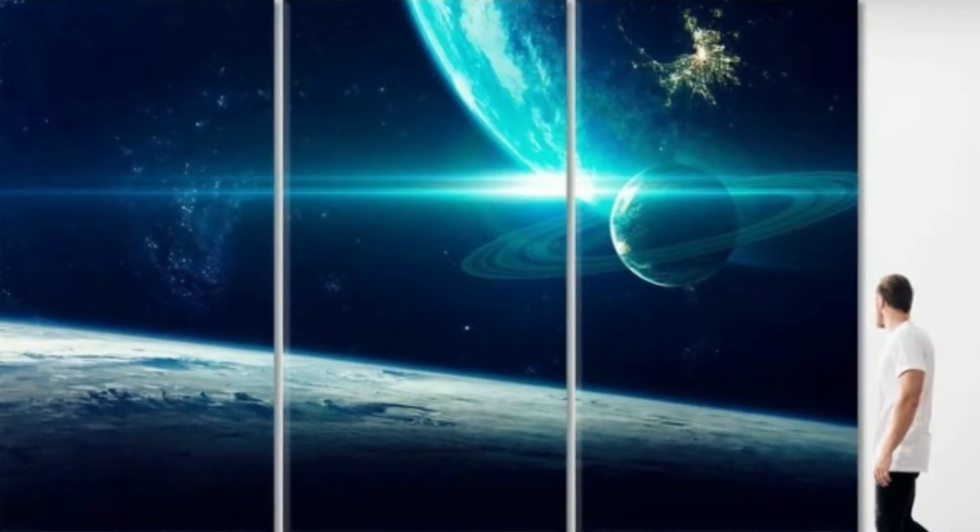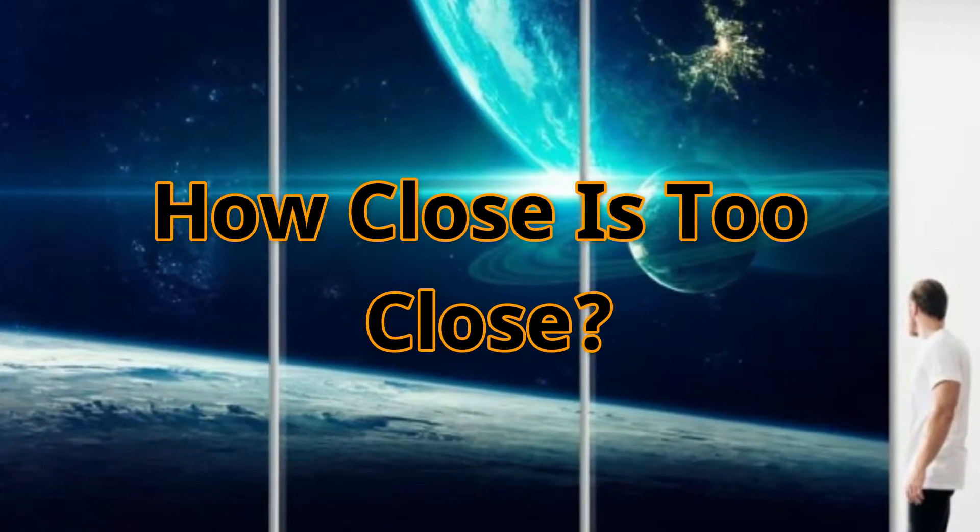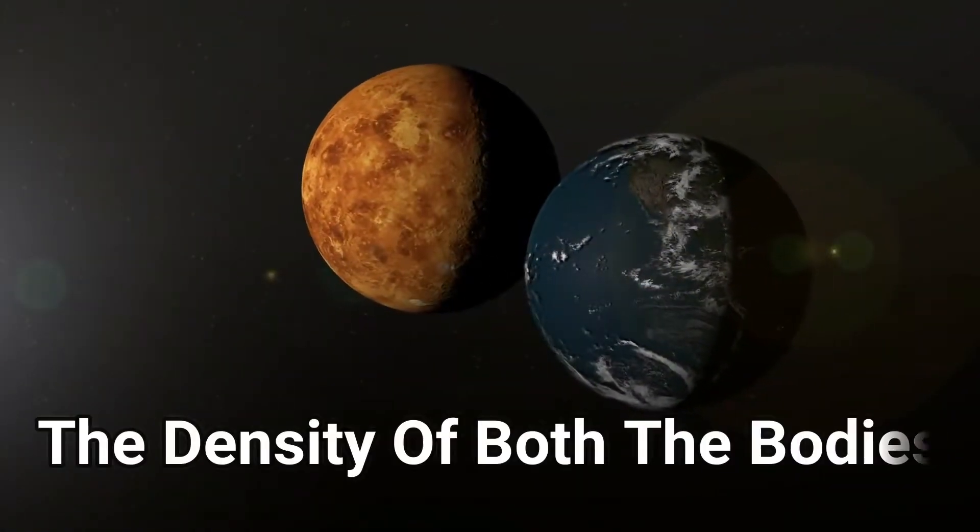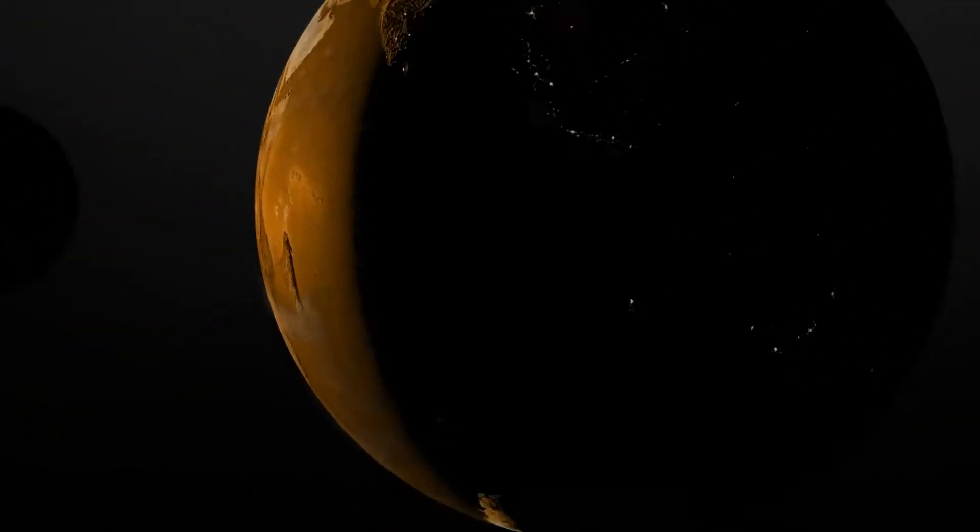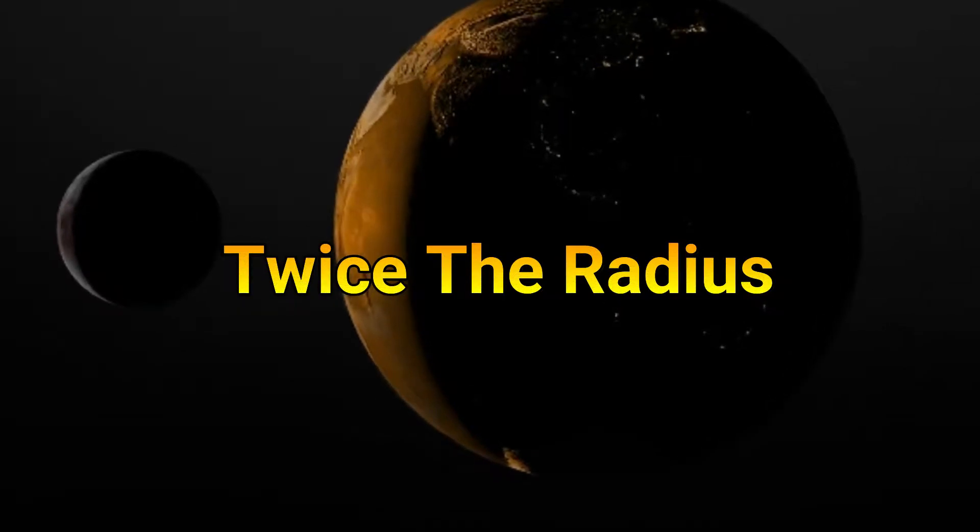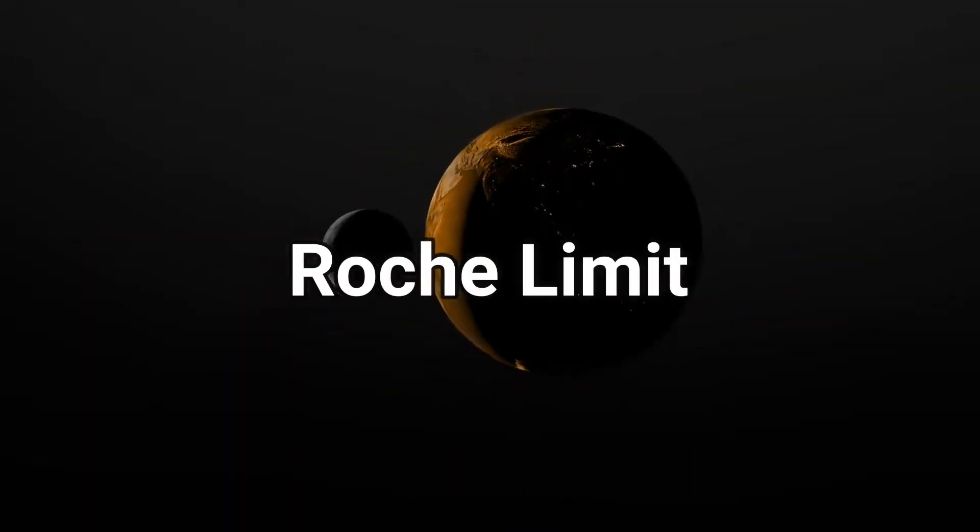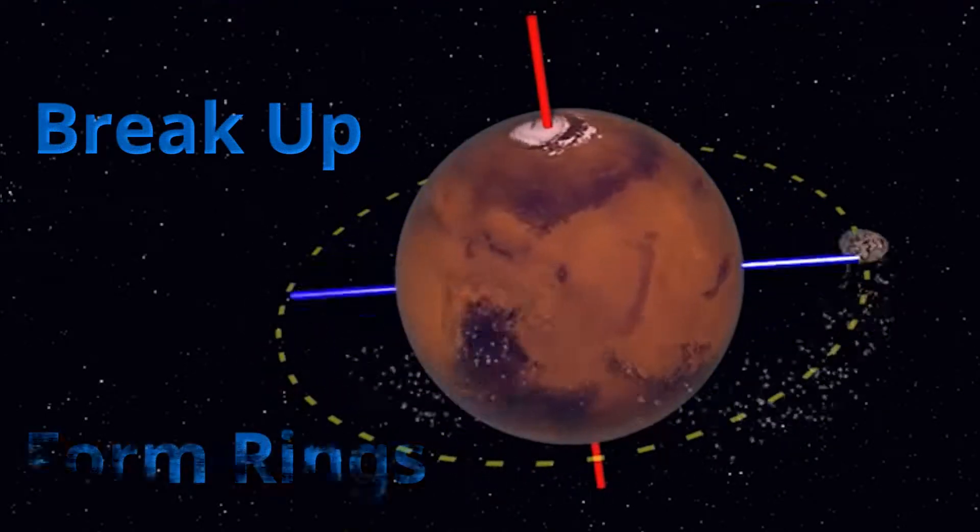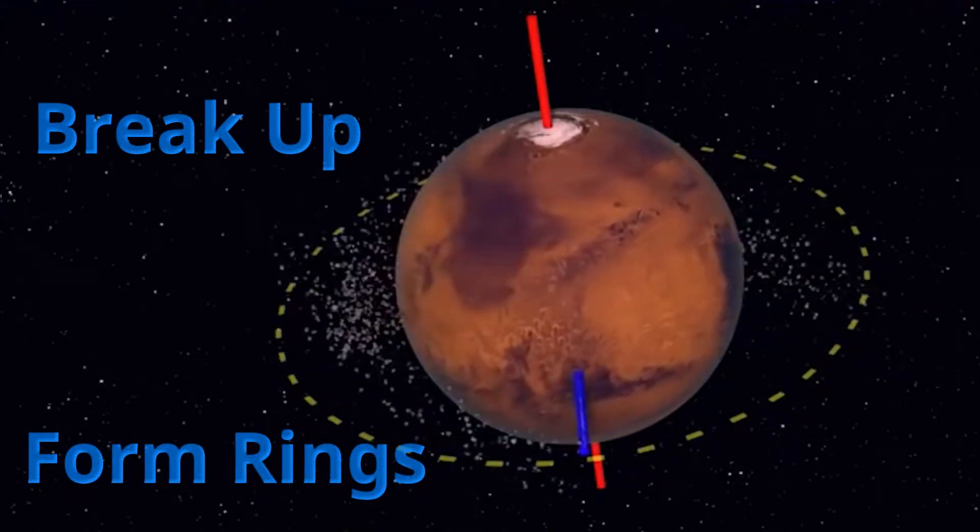Now you might be thinking, how close is too close? It depends on the size of the heavier body and the density of both bodies, but it is normally around twice the radius of the heavier body, which is called the Roche limit. If a moon were to orbit inside this range, it would break up and form rings, regardless of the type of planet.